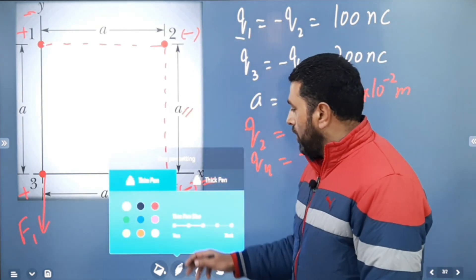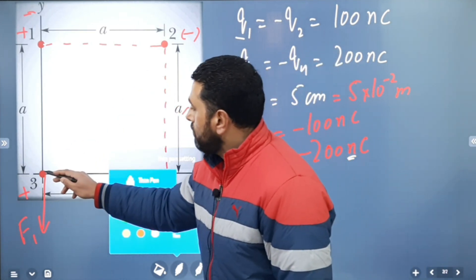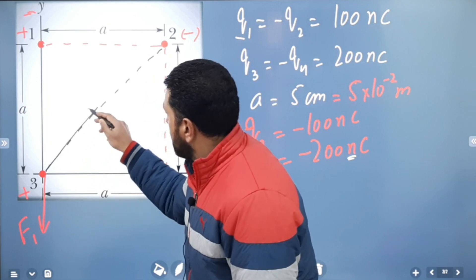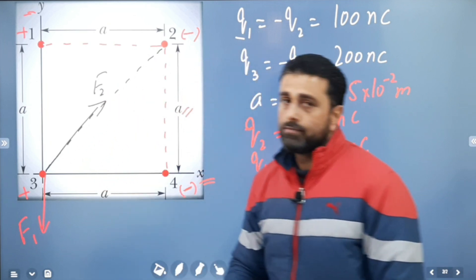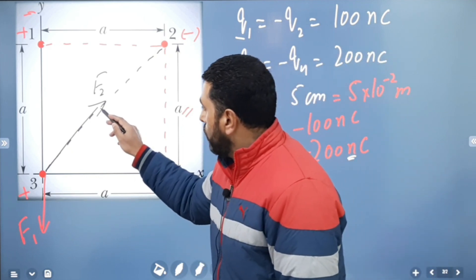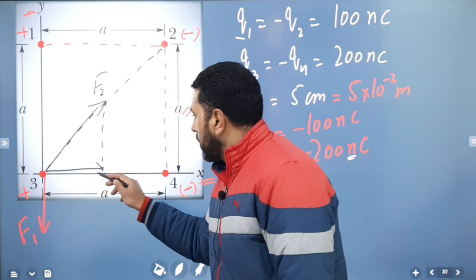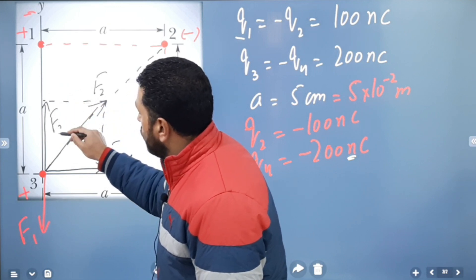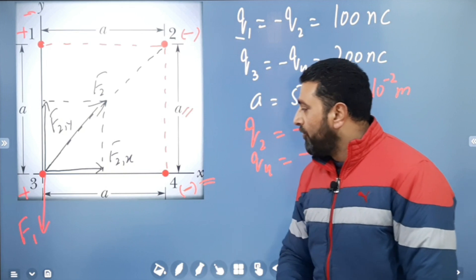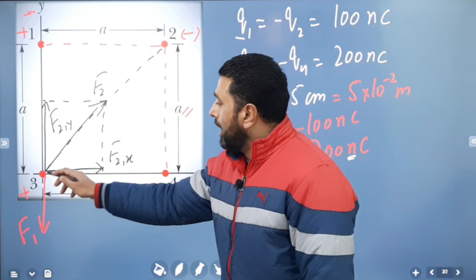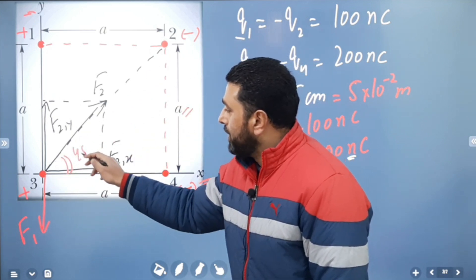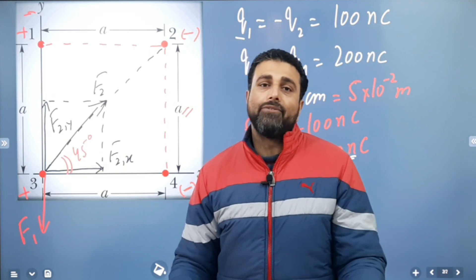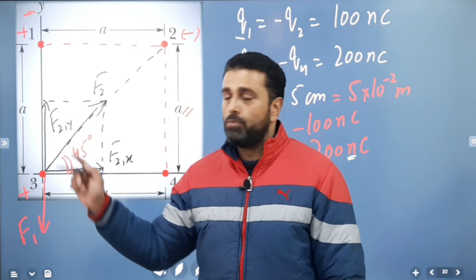Particle 2 will exert an attractive force along the diagonal. I'll call this F2. We can resolve that force: F2x is the X component in the positive direction of the X-axis, and F2y is the Y component. This force is along the diagonal of the square, so this angle must be 45 degrees. At 45 degrees, the X and Y components are equal because cos 45 and sin 45 are both 1 over root 2.